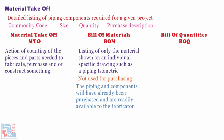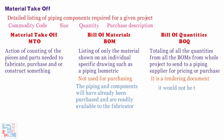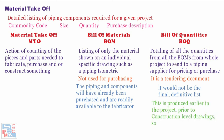Piping bill of quantities (BOQ), also called material summary, is the totaling of all quantities from all the BOMs across the whole project, sent to a piping supplier for pricing or purchase. The piping BOQ is a tendering document covering the scope of materials for the entire piping component of the project, but it would not be the final definitive list. It is produced earlier in the project, prior to construction-level drawings, so it would not have the definition that the MTO gives.